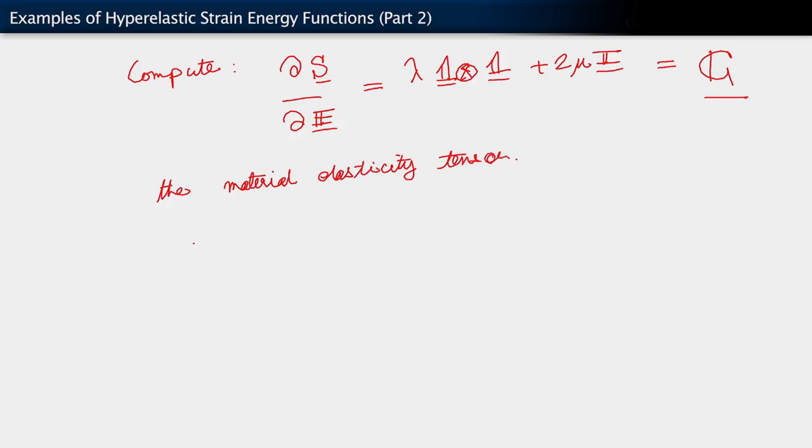Where this quantity i is the fourth order symmetric identity tensor.